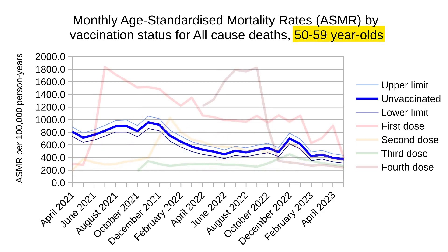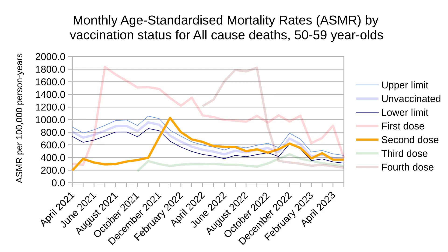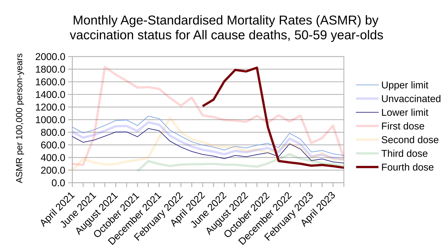For people in their 50s, obviously the mortality rates are going to be higher as people get older. First-dose recipients had a couple of months of low mortality in early 2021, but their mortality skyrocketed and stayed high ever since. Second-dose individuals start out having less mortality, but from 2022 onwards have very similar mortality to the control group. Three-dose individuals seem to have less mortality, whereas people who took four doses had significantly increased all-cause mortality, at least initially in this age group.